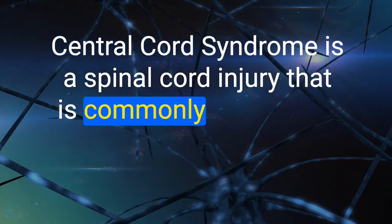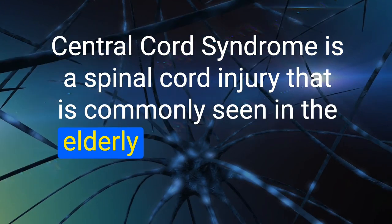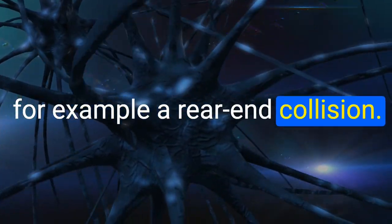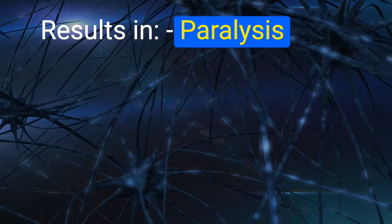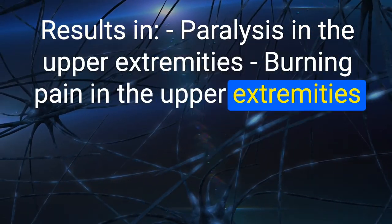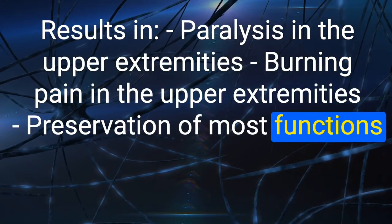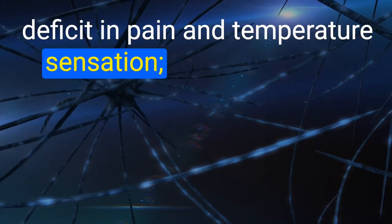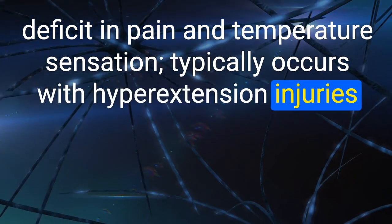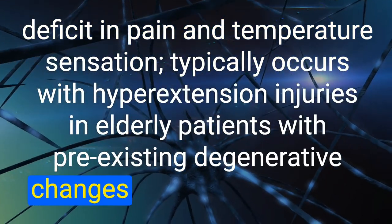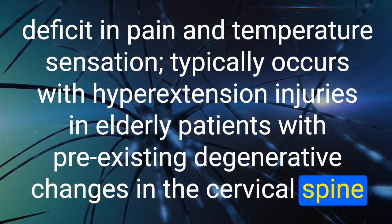2. Central cord syndrome is a spinal cord injury commonly seen in the elderly following forced hyperextension of the neck, for example a rear-end collision. It results in paralysis and burning pain in the upper extremities, preservation of most functions in the lower extremities, and may be accompanied by localized deficits in pain and temperature sensation. Typically occurs with hyperextension injuries in elderly patients with pre-existing degenerative changes in the cervical spine.